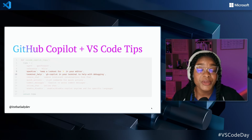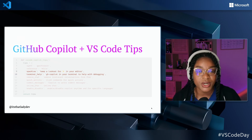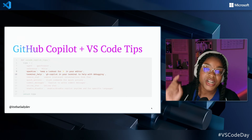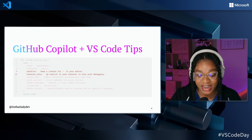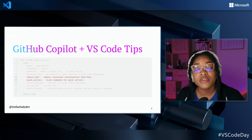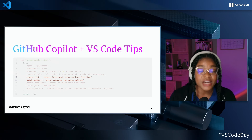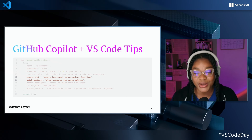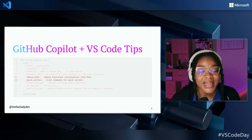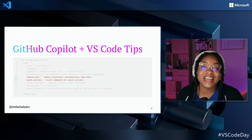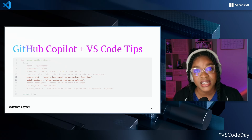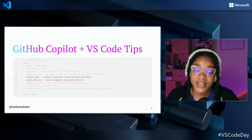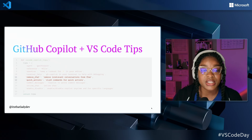GitHub Copilot is also here to help you with your terminal. If you ever receive an error message in your terminal, you can highlight that error message, right-click and click 'Copilot Explain,' and Copilot will help you debug right there. You can also remove irrelevant conversations from the chat interface. We have quick actions called slash commands — these help you quickly get testing, documentation, explain code, fix code, and so on.